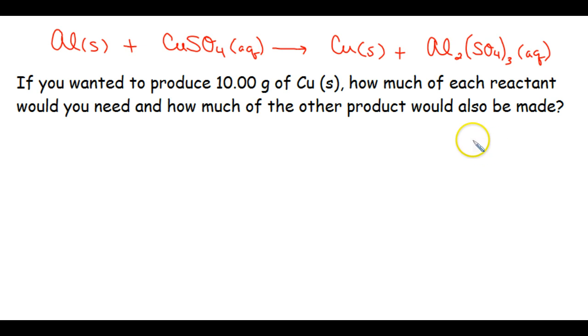So in our question, we say that we want to make 10 grams of copper solid. So we want to know how much of each reactant do we actually need and how much of the other product will be made.